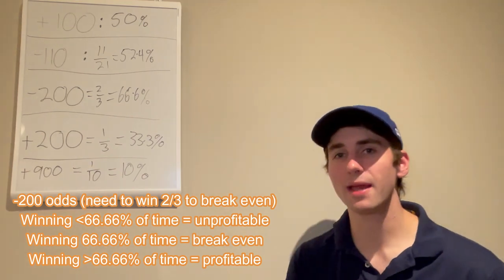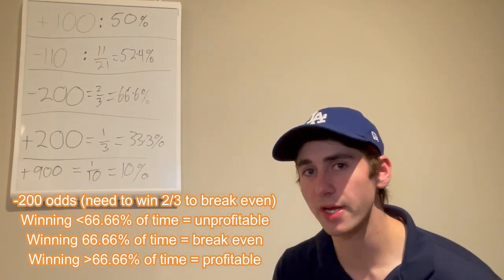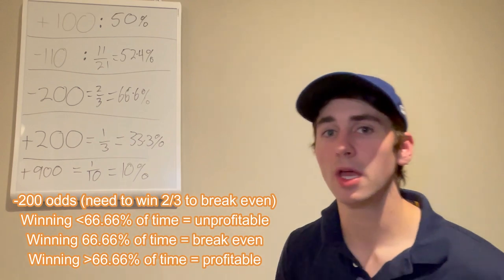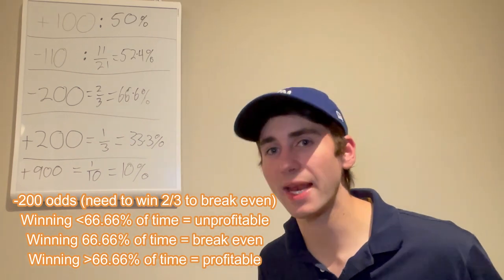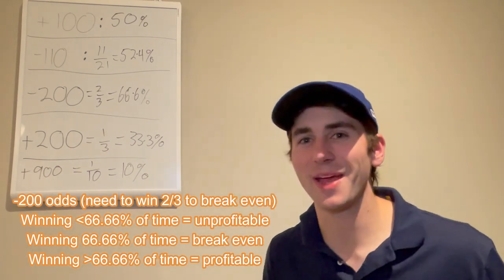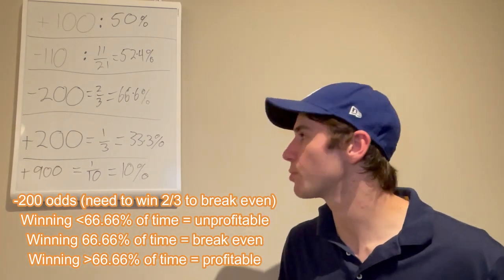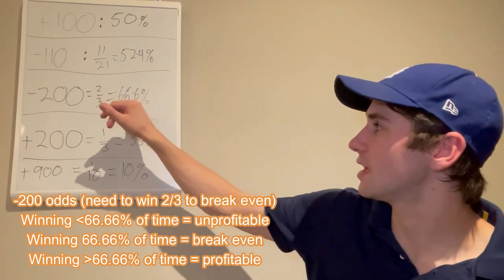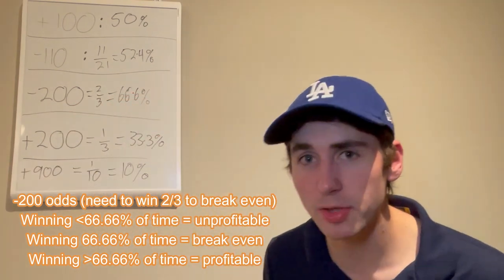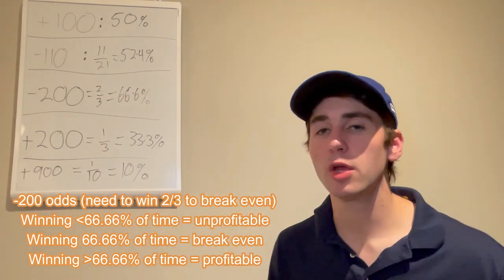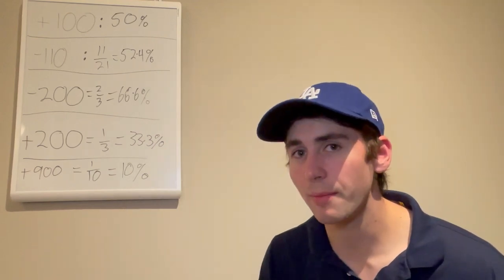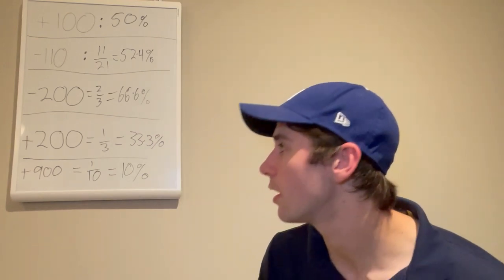So if you are betting minus 200 and you are winning 70% of the time, you are a mathematically profitable sports bettor — you're going to make a lot of money. If you're winning only 65% of the time, you're a losing sports bettor. It's just how the math works out.